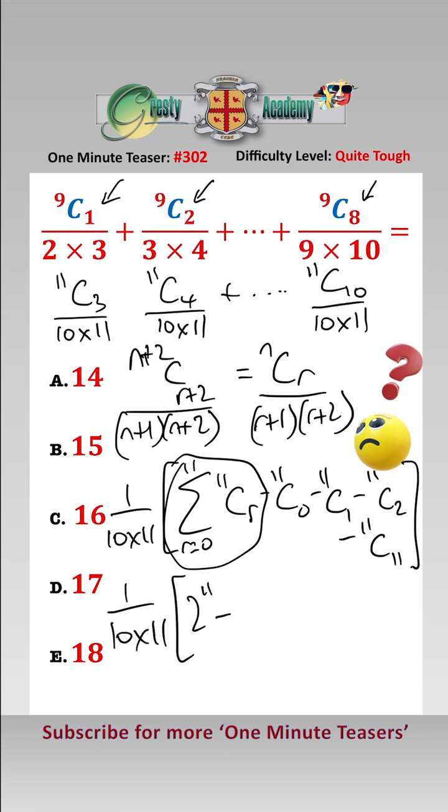This gives us 1 over 10 times 11. The sum is 2 to the power of 11, and then 11C0 is 1, 11C1 is 11, 11C2 is 55, and 11C11 is 1. That equals 1,980 over 110, which is 18, answer E.